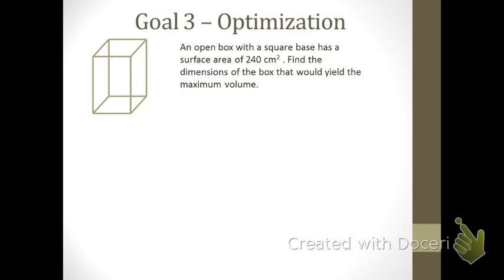The first thing to mention is that this is an open box — specifically, the top side is open — so this box has five sides instead of the normal six faces a rectangular prism would have. The box has a square base, so we call one base edge x, and since the base is square, the other is x as well. The third dimension — the height — we'll call h. We need to find the dimensions that maximize the volume.